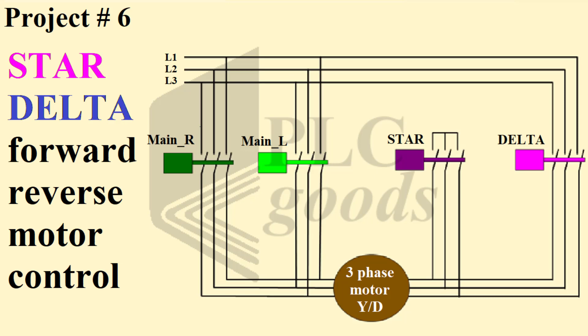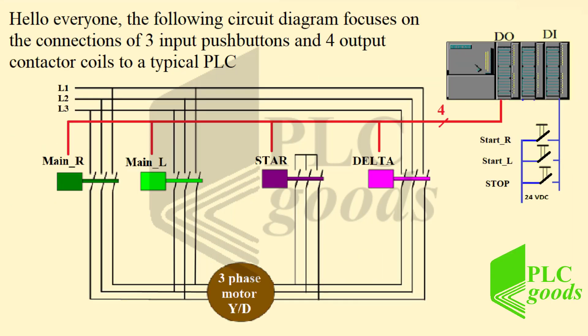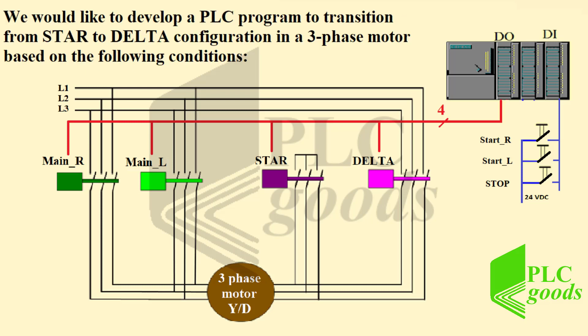Project number six: star delta forward reverse motor control. Hello everyone, the following circuit diagram focuses on the connections of three input push buttons and four output contactor coils to a typical PLC. We would like to develop a PLC program to transition from star to delta configuration in a three-phase motor based on the following conditions.